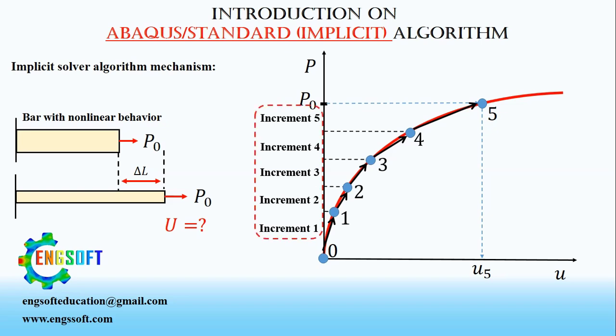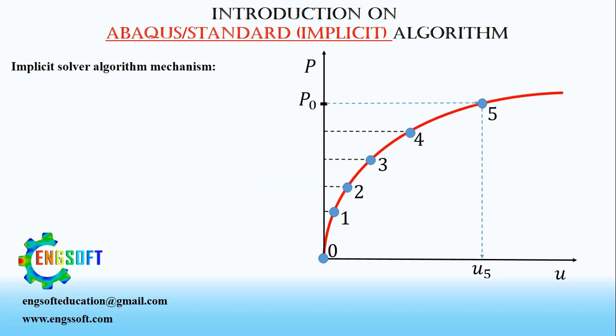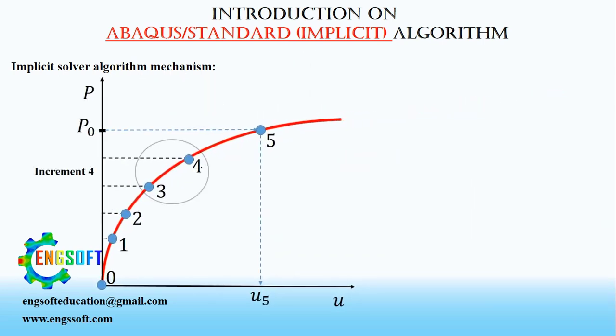Now let's see how an increment is solved. As the problem is assumed to be nonlinear, Implicit Solver uses iterative Newton-Raphson method. For understanding how iterative method works, imagine that the solver is solving the fourth increment.